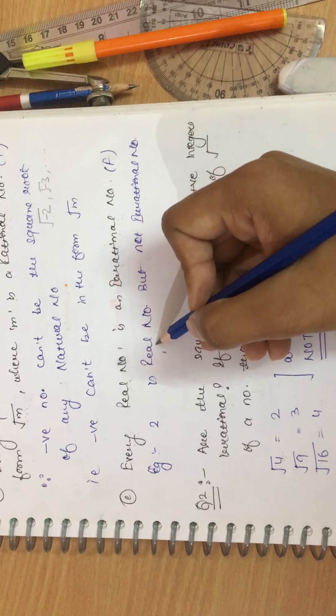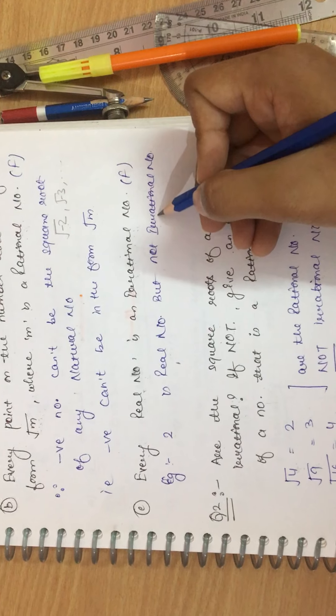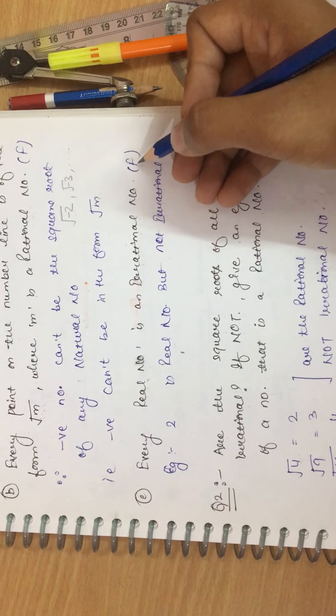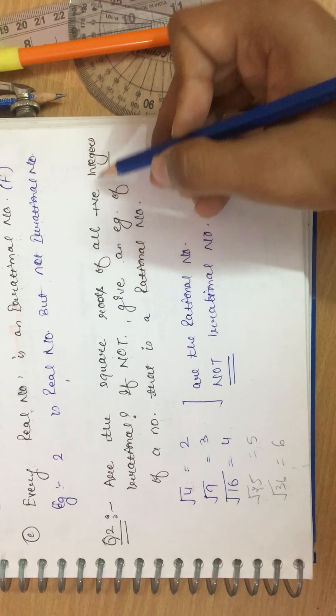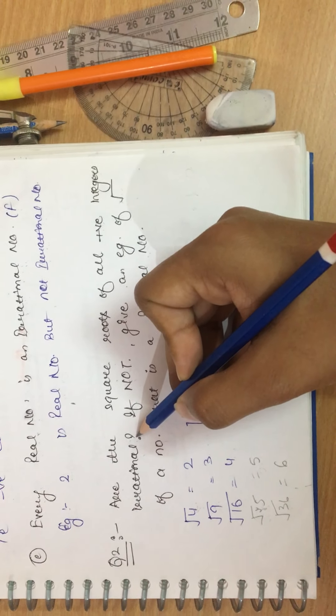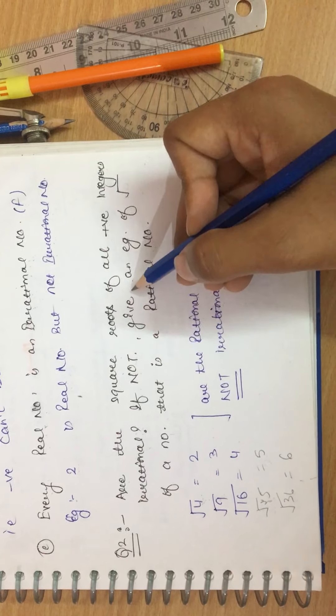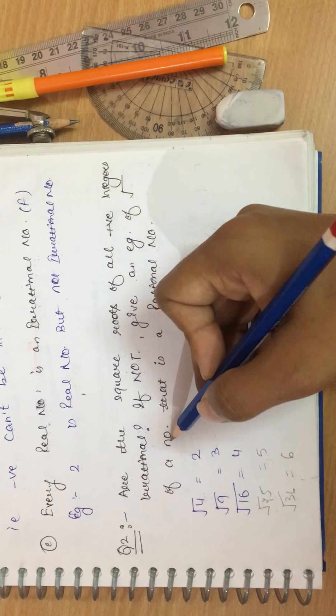Third statement says that every real number is an irrational number. No, because real number is a mixture of rational or irrational both. So as an example we can take two which is a real number but not an irrational number. So this statement is false.